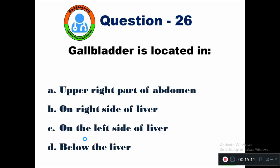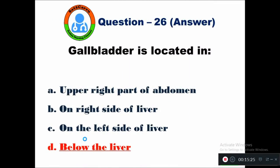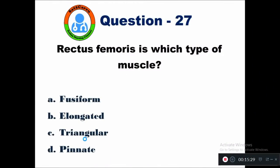Question 26: Gallbladder is located in — option A upper right part of abdomen, B on right side of liver, C on left side of liver, D below the liver. The gallbladder is located below the liver.